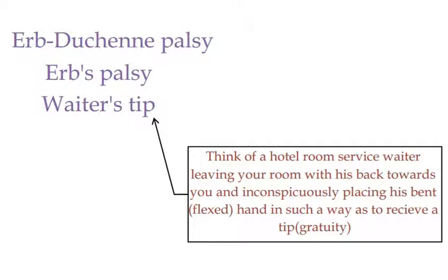In Erb-Duchenne Palsy, the limb hangs by the side due to paralysis of the abductors. It is also medially rotated due to paralysis of the lateral rotators. The forearm is pronated due to loss of biceps function, since C5 and C6 root injury leads to biceps damage. This classic physical position is commonly called Waiter's Tip.